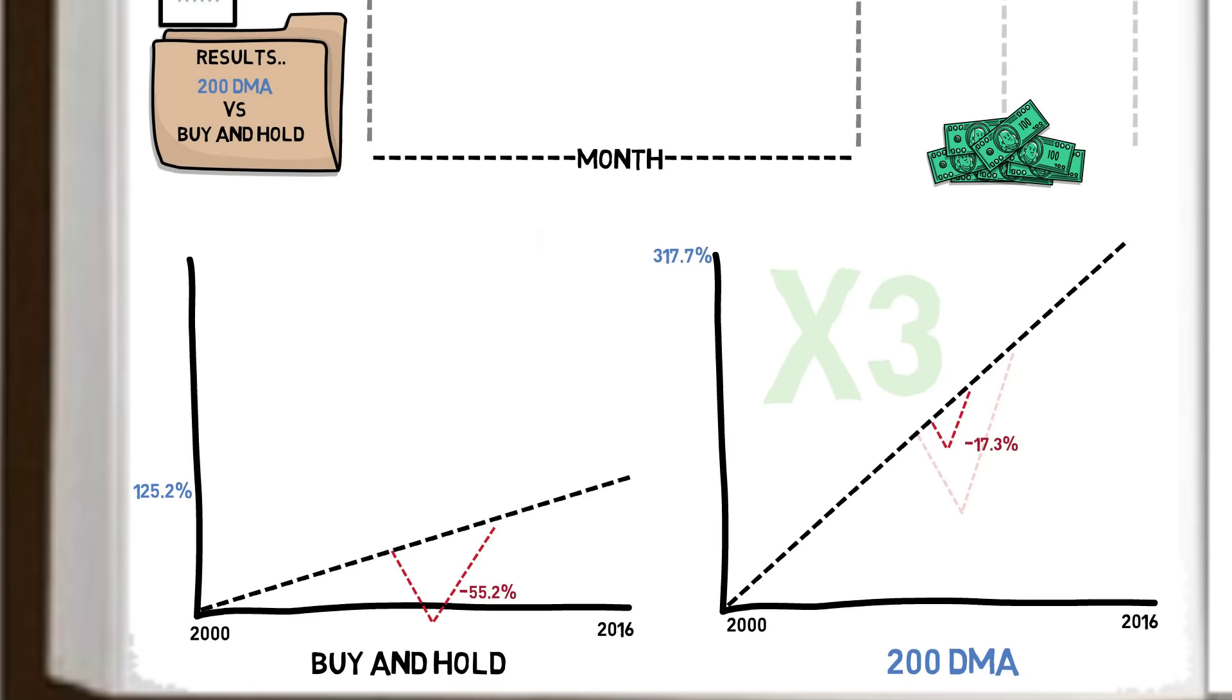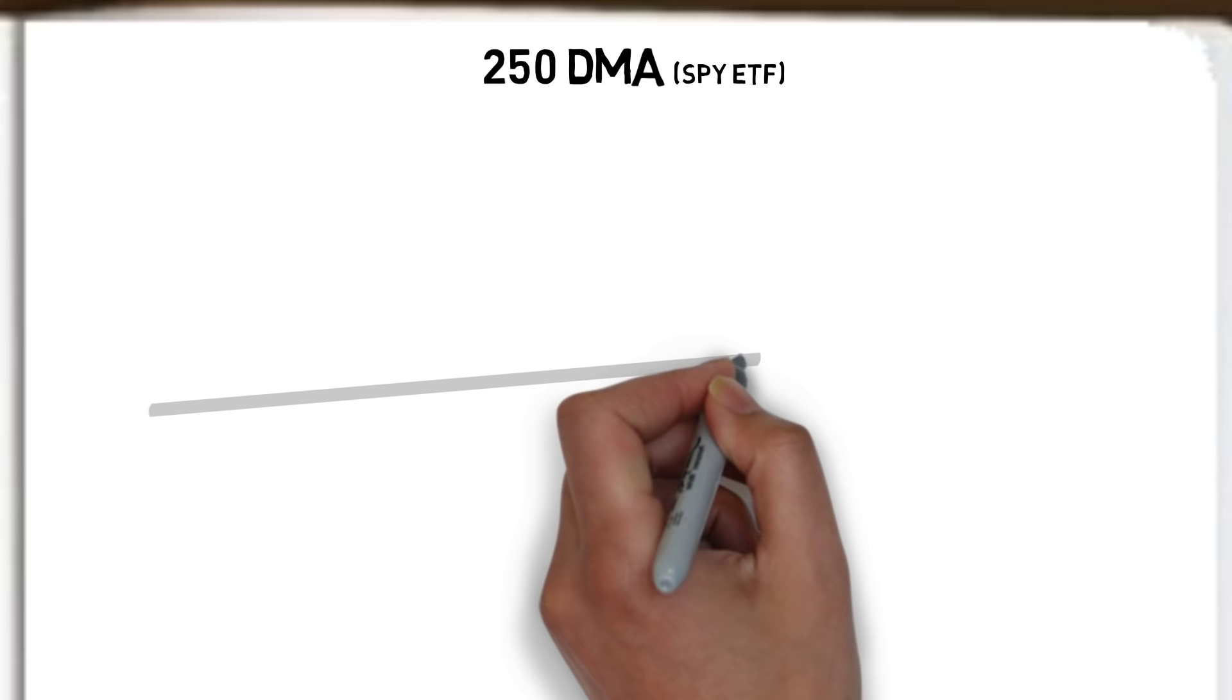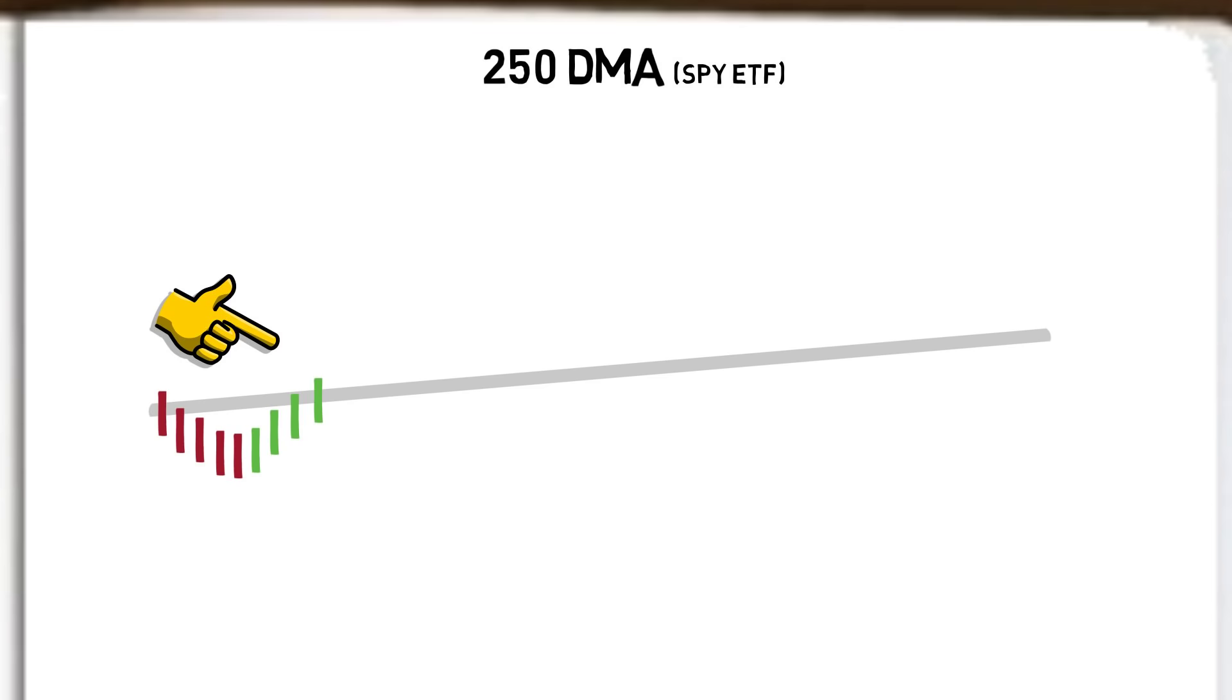Next we have the 250 day moving average, using the same S&P 500 index as the benchmark. The signal to buy for this strategy is when price crosses and closes above the 250 day average, and unlike the previous strategy we do not wait for the end of the month, we wait for the close of the day instead.